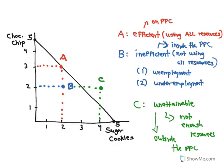So this is important to understand here. No matter how the PPC is shaped, a point on the PPC is efficient, inside is inefficient, and outside is unattainable. We don't have enough resources to produce that combination.